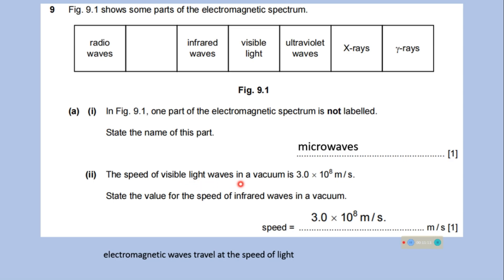The speed of visible light waves in a vacuum is 3 into 10 to the power 8 meter per second. State the value for the speed of infrared waves in the vacuum. We know that infrared waves are also part of electromagnetic spectrum, and all electromagnetic waves travel at the speed of light. So its speed is 3 into 10 to the power 8 meter per second.